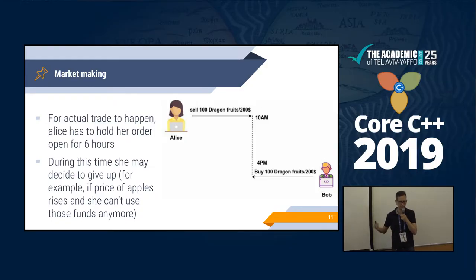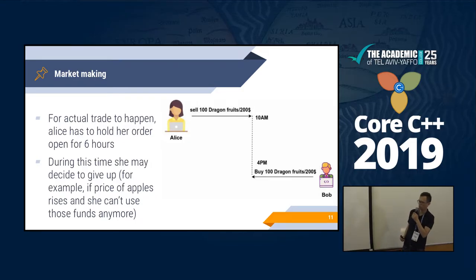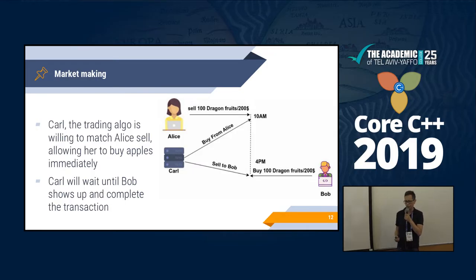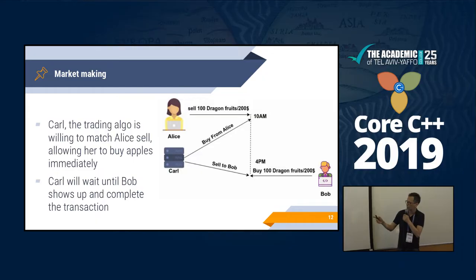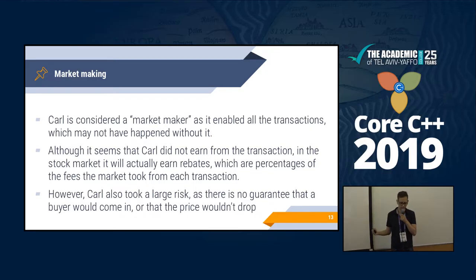Think about all the transactions waiting for this to happen — she wants to buy apples, and maybe the person she's buying from wants to use that money to buy something else. The market is stuck on this transaction. In comes Carl, the trading algorithm. Carl is willing to buy those dragon fruits immediately, wait six hours, and sell them to Bob when he comes in. Carl added liquidity to the market and enabled a lot of transactions to happen.